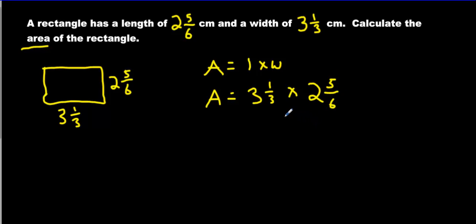We have three and a third multiplied by two and five-sixths. Estimation time. Let's see. What should our answer be close to? Well, three and a third is going to be close to three, right? And two and five-sixths, oh my gosh, that's so close to three as well. Because five over six is almost a whole. So we have two wholes and almost another whole, that's going to make very close to three wholes. So we're going to have almost three times three. We should get almost nine.